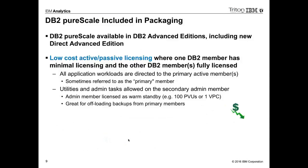PureScale is also included in all editions. PureScale is our continuous availability solution — I have a cluster of machines all looking at the same database, workloads can go across all machines, and if one machine fails I can flip my workload to another. What we've licensed is the use of a second node or second member in all editions, so you can use it for failover, maintenance, and administrative tasks. It's a restricted version of PureScale — only two nodes — but the second node is available for these types of tasks.